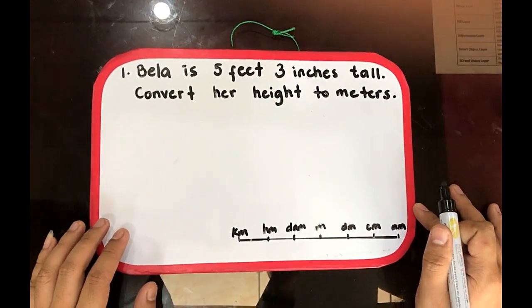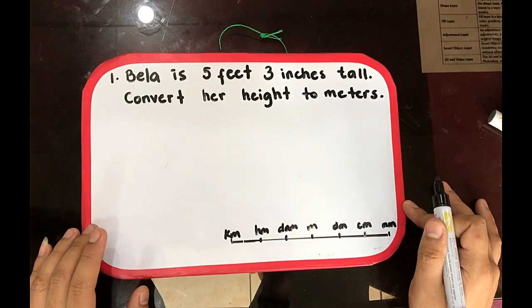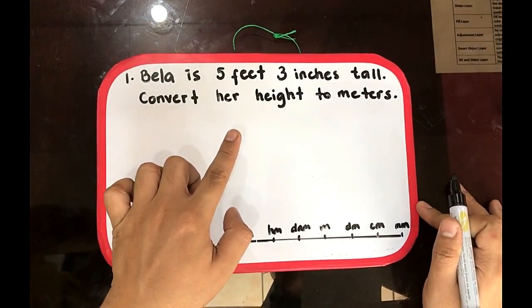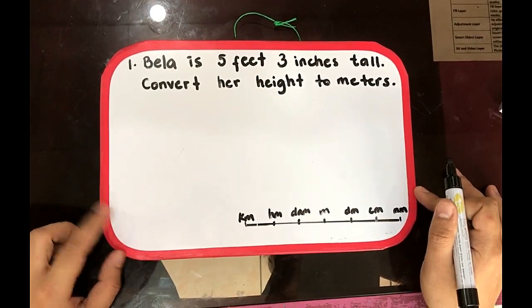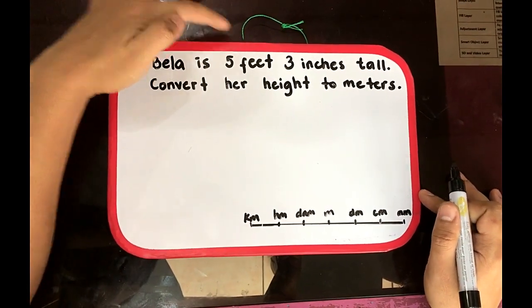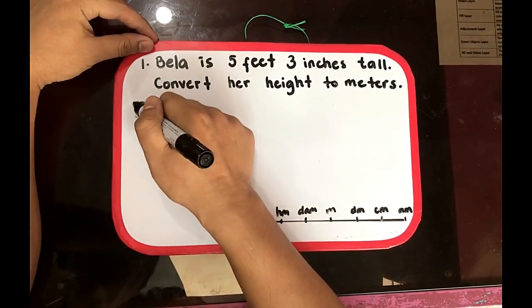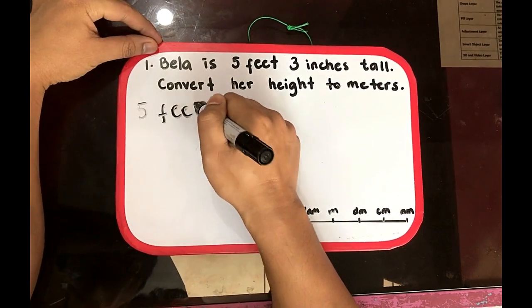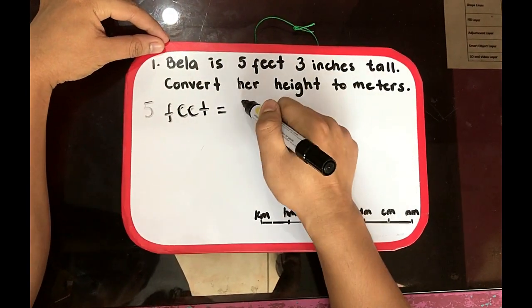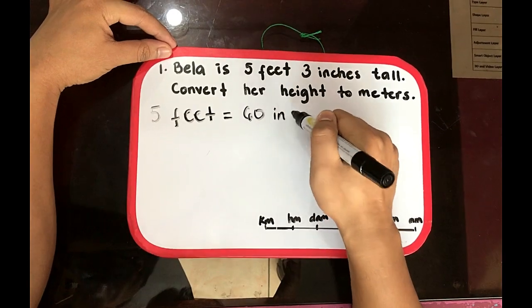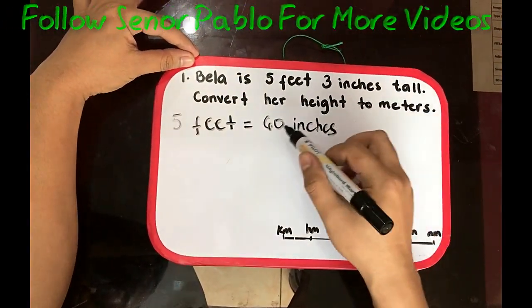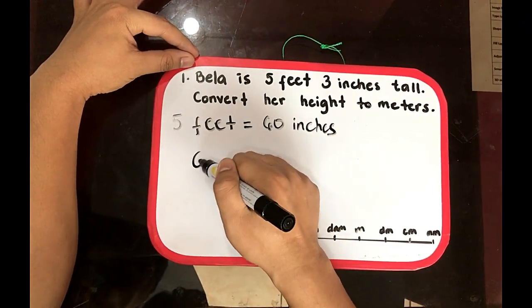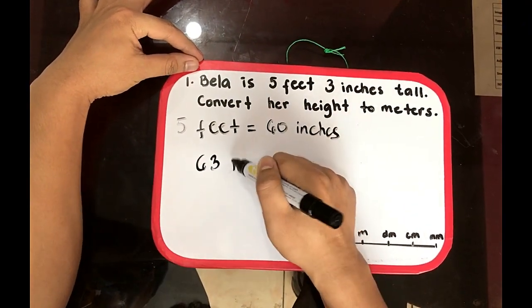MMC 2019 grade 7 question number 1. Bella is 5 feet 3 inches tall. Convert her height in meters. So we know that 5 feet is equal to 60 inches, so we need to add 60 plus 3 inches. So that is 63 inches.